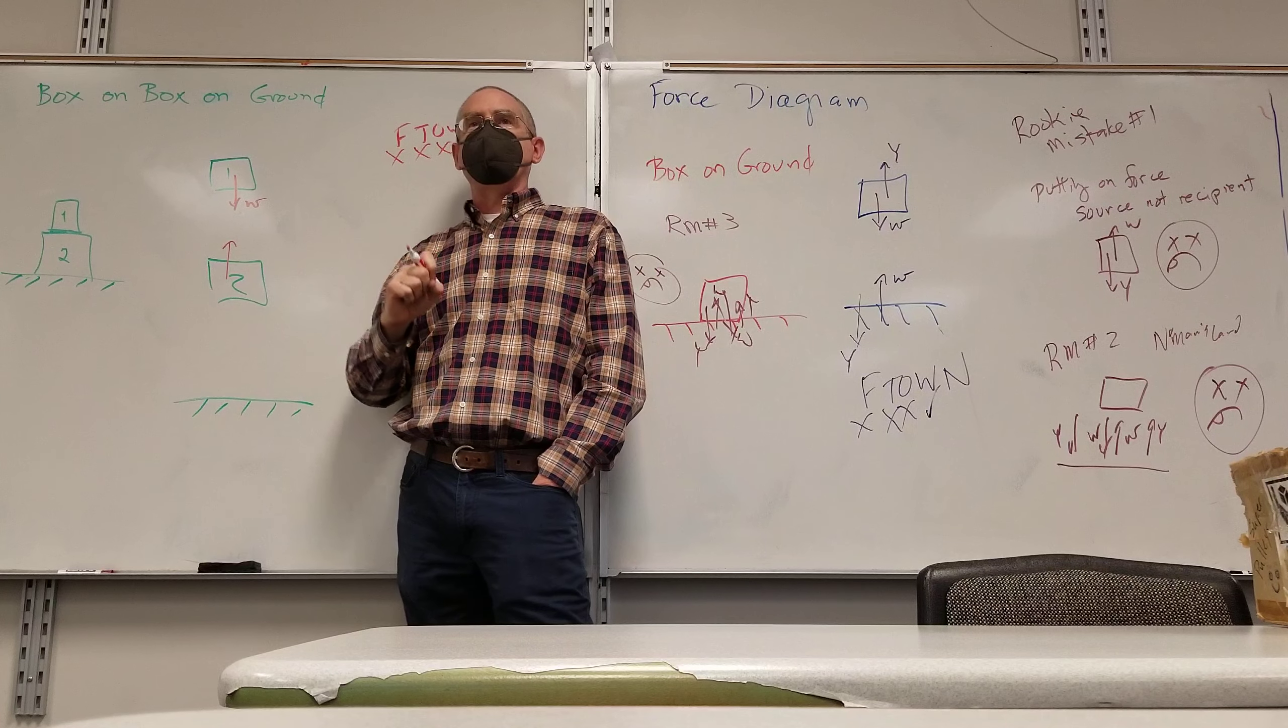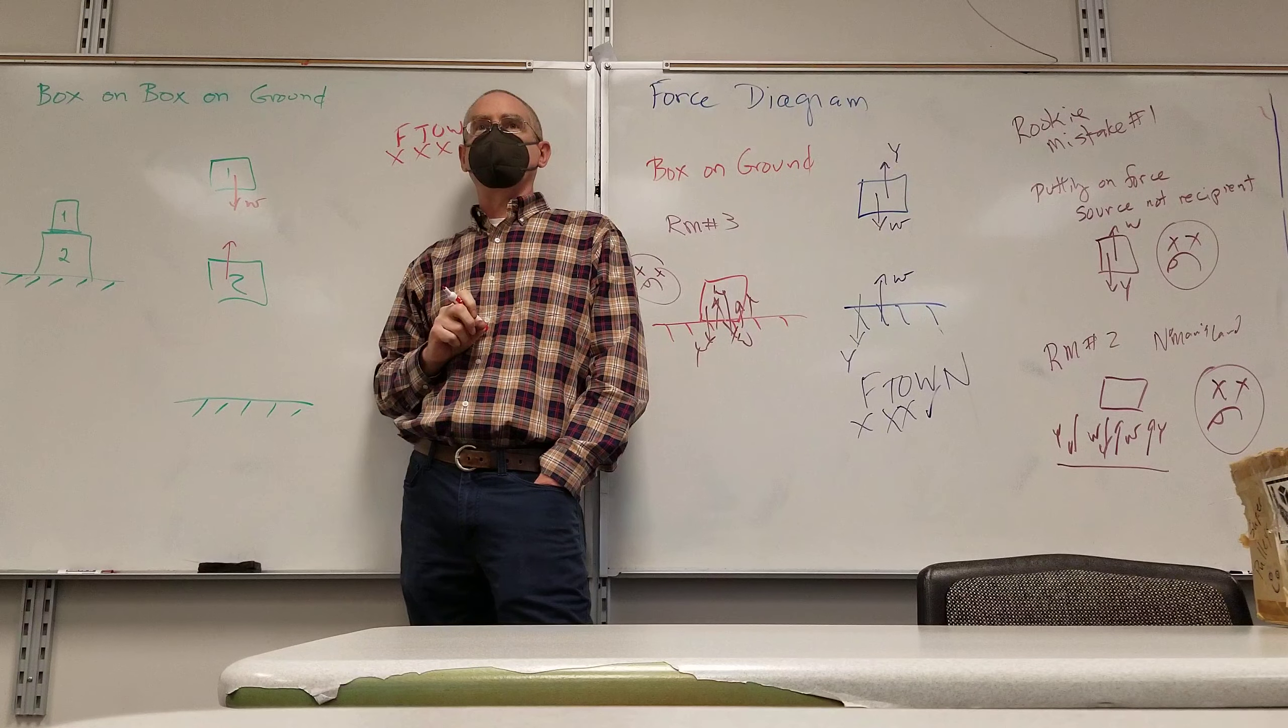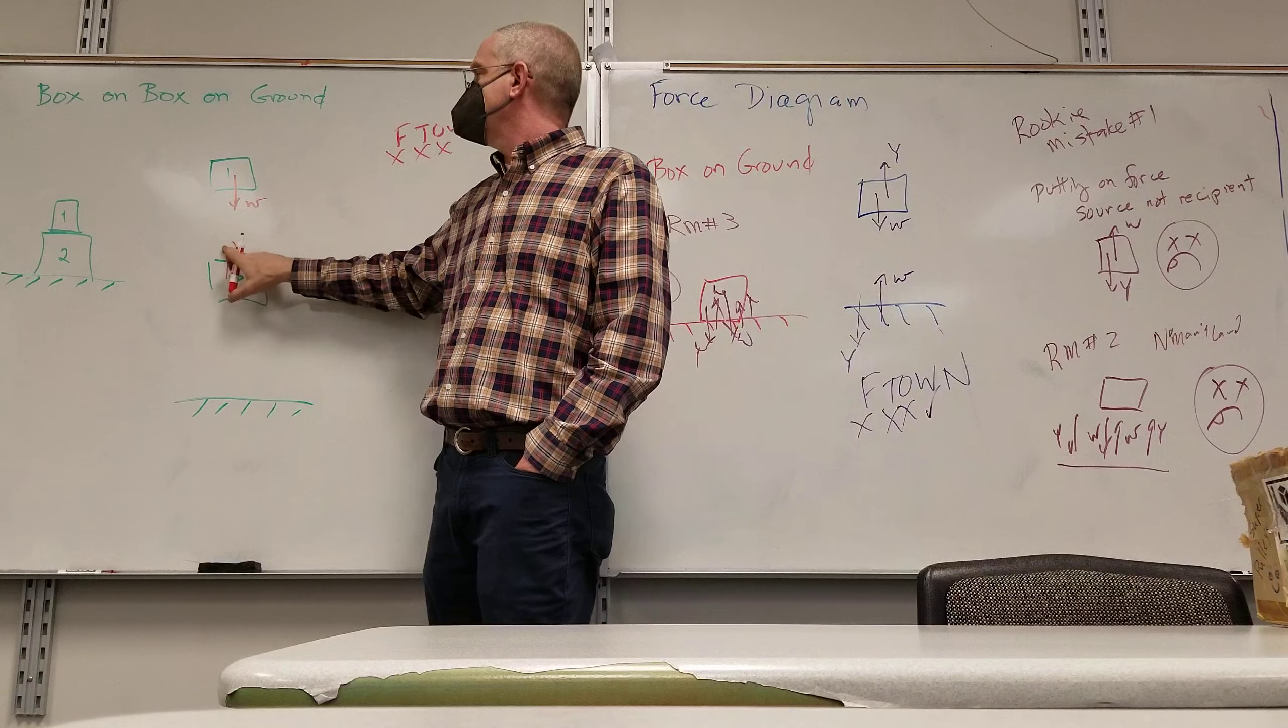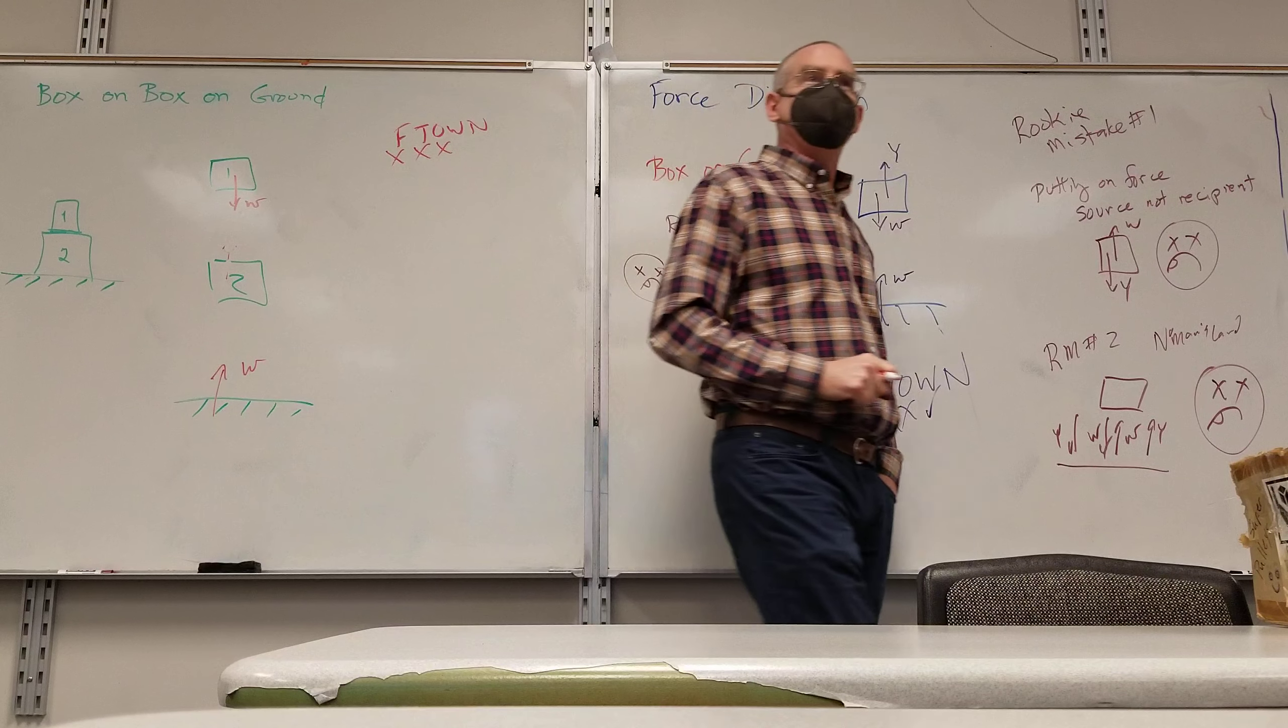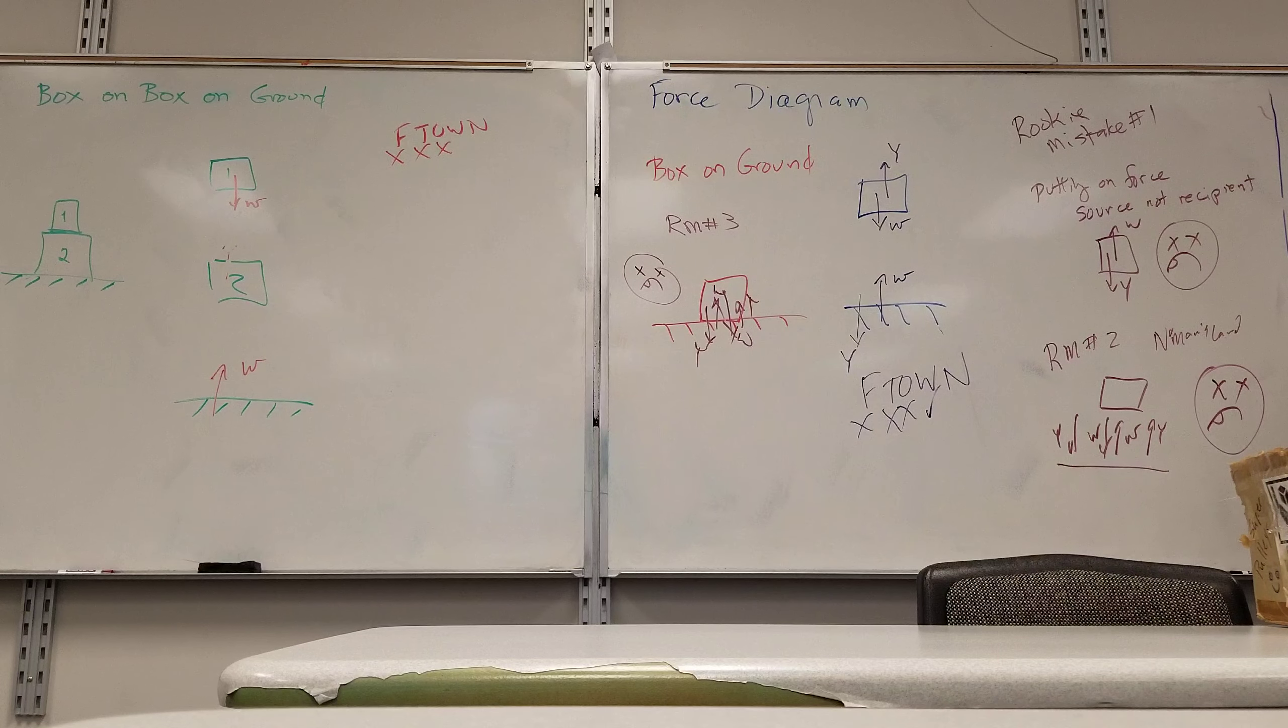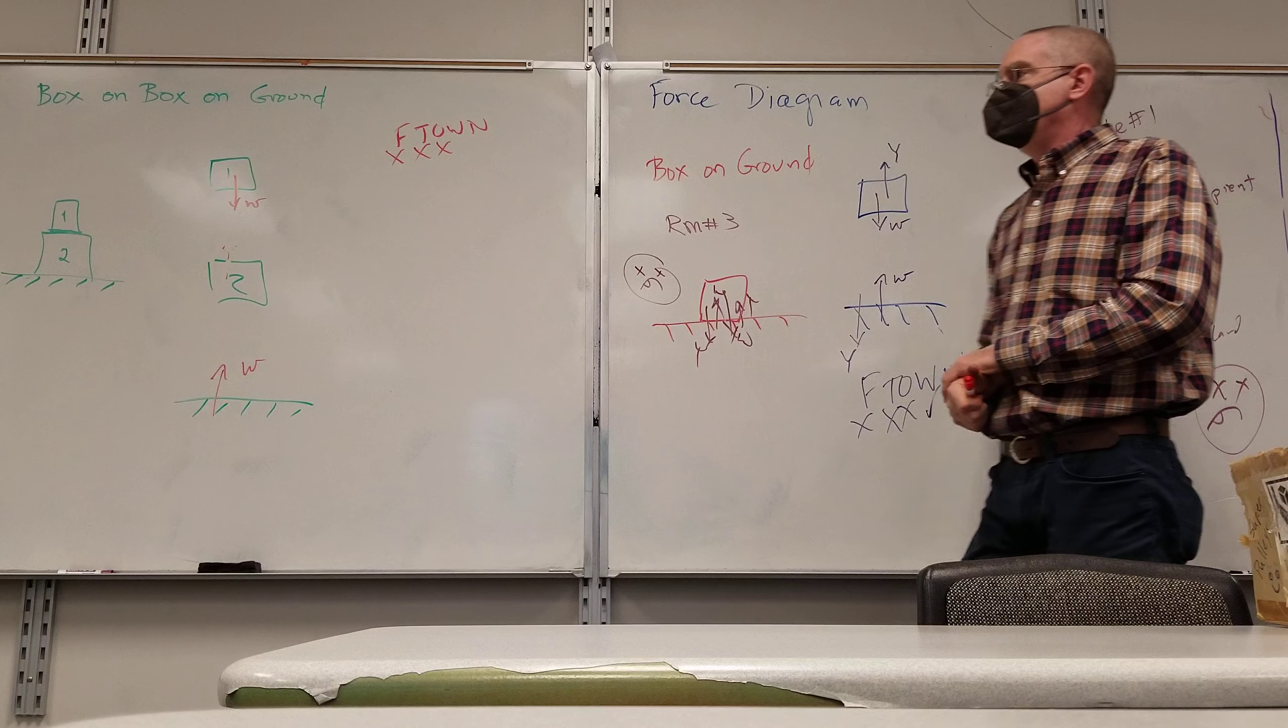If box two suddenly disappeared, does box one suddenly have no weight? What would happen to box one if box two suddenly disappeared? So what's causing this weight? More specific, what object? The earth. That's the other part. That's the pair.